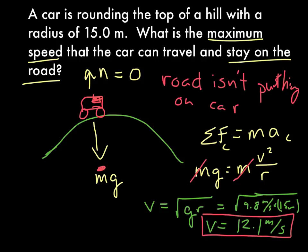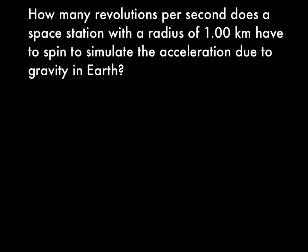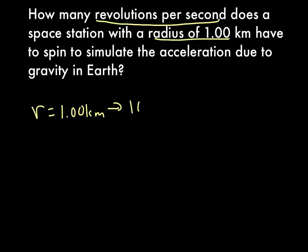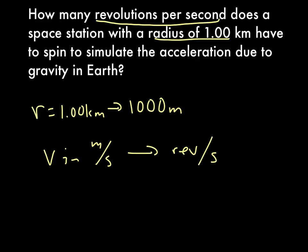Key point: the normal force is 0 because you don't require the road to push you back up. All of your acceleration is caused by gravity, so at this point your car is in free fall. Let's try one more example. In this final example, we're looking for how many revolutions per second a space station with a radius of 1 kilometer — that's 1,000 meters — needs to spin. We'll find velocity in meters per second and then convert to revolutions per second.